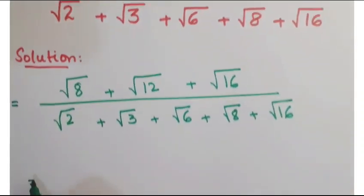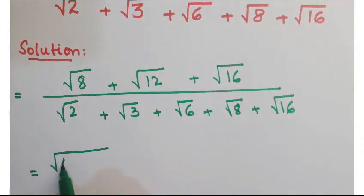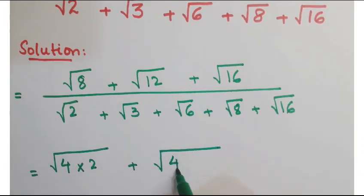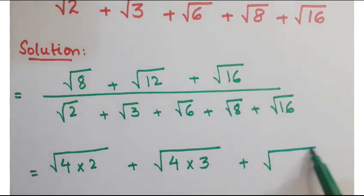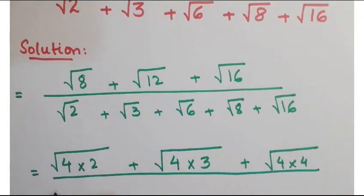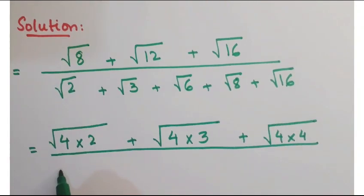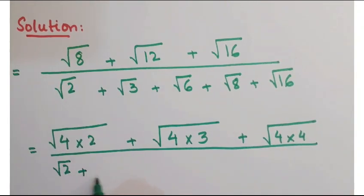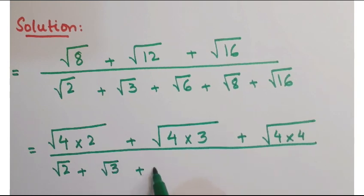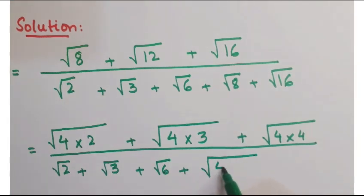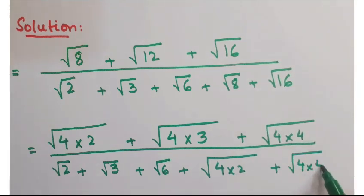√8 can be written as √(4×2), and √12 can be written as √(4×3), plus √16 can be written as √(4×4). Further, you can write the denominator as √2 + √3 + √6 + √(4×2) + √(4×4).